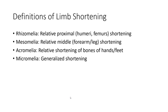Definition of limb shortening: Rizomelia refers to relative proximal shortening of the humerus and femur. Mesomelia is relative middle segment shortening, like the forearm and leg. Acromelia is relative shortening of the hand and feet. Micromelia refers to generalized shortening.